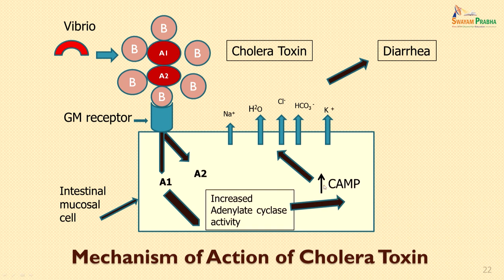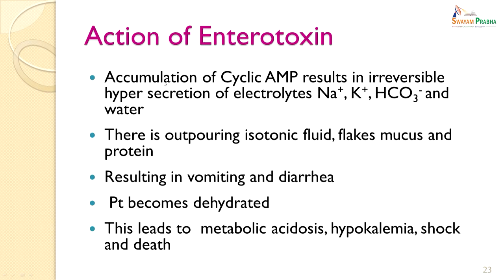Once cyclic AMP increases within the cell, there is a release of sodium ions, chloride ions, bicarbonate ions and potassium ions into the intestinal lumen, resulting in an outpouring of water into the lumen and diarrhoea. To revise: there is an accumulation of cyclic AMP in the intestinal cells resulting in irreversible hypersecretion of electrolytes — sodium, potassium, bicarbonates and water. There is an outpouring of isotonic fluid with flakes of mucus and protein, resulting in vomiting and diarrhoea. The patient becomes dehydrated, which leads to metabolic acidosis, hypokalaemia, shock and death.